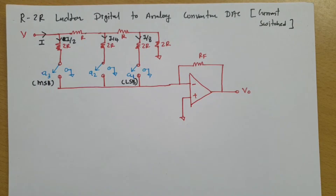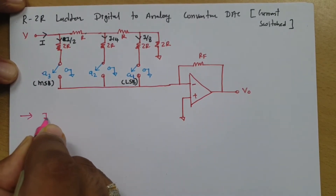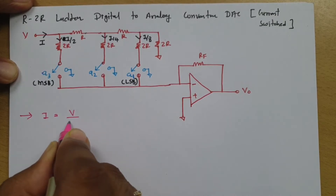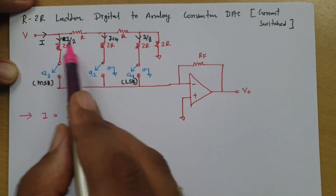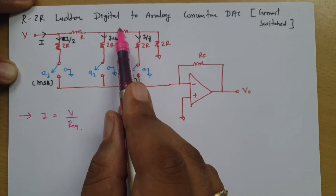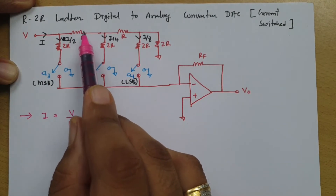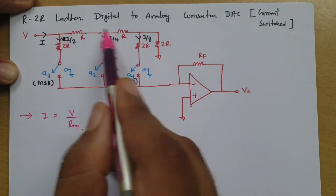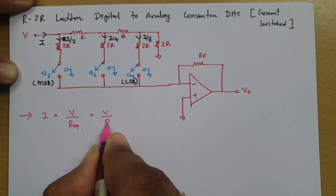To identify the output voltage, we first need to calculate current I. The supplied current I = V / R_equivalent, where R_equivalent is the total resistance of this network. Looking at the resultant resistance: 2R parallel to R gives R, in series with R gives 2R, and 2R parallel to R gives R again. So the equivalent resistance of this network is R, and therefore I = V / R.